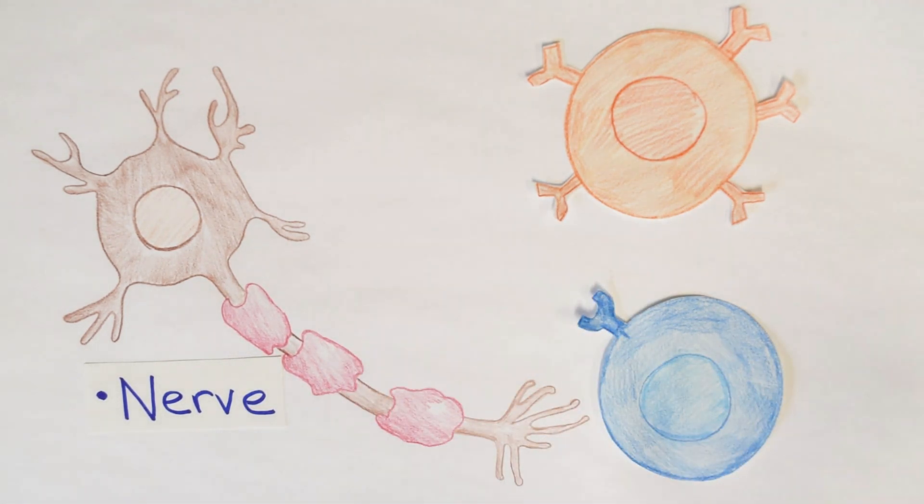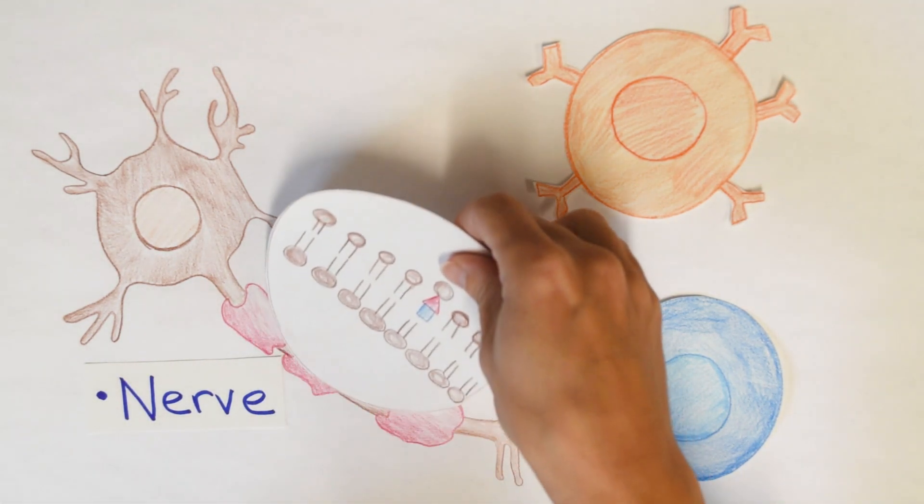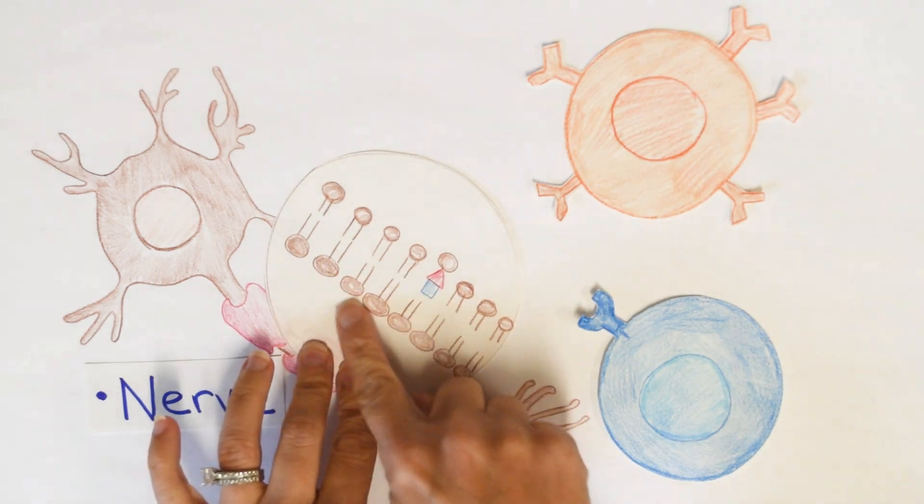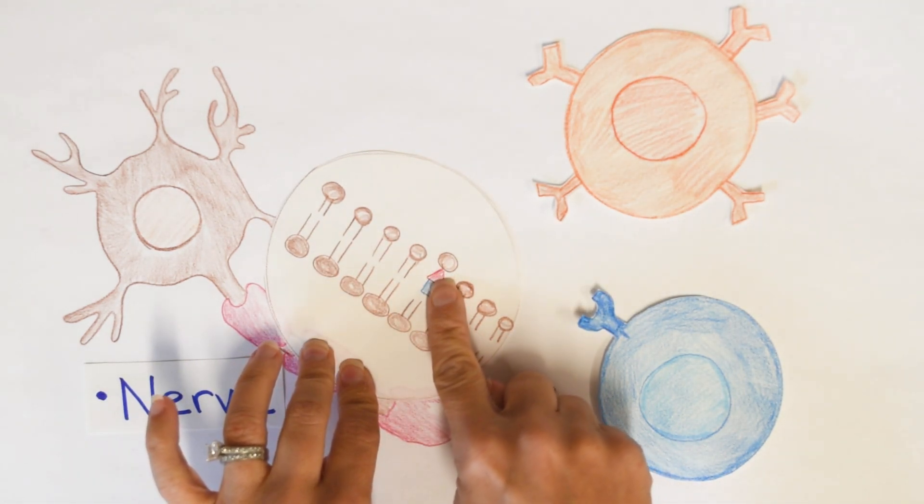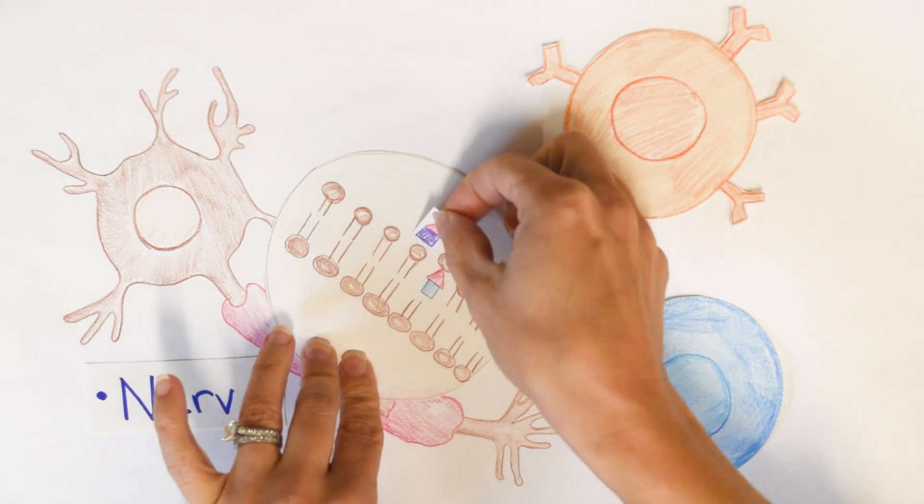All right. So we're going to have to zoom in to explain. Here I've drawn a phospholipid bilayer. That's what all of our cells are covered with. I just drew them as brown circles here. And I want to point out this protein.